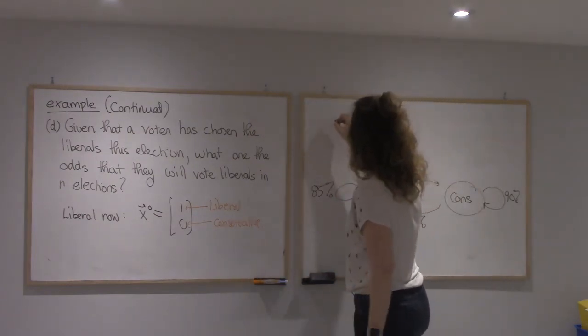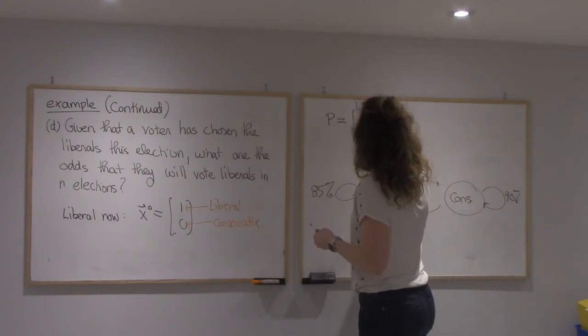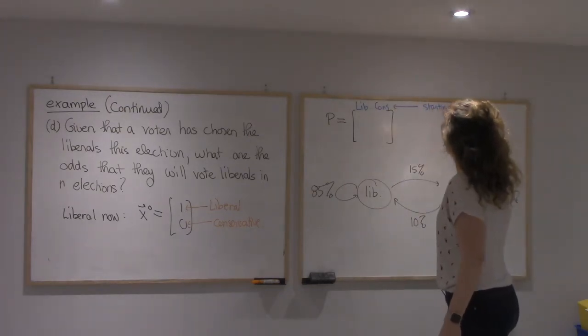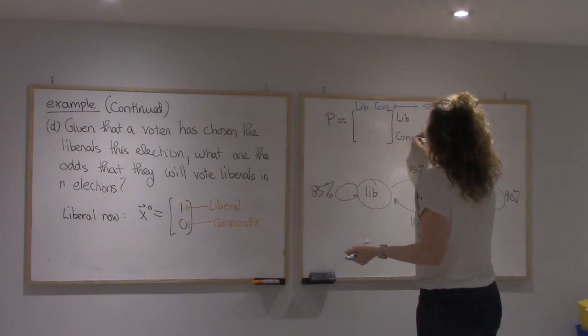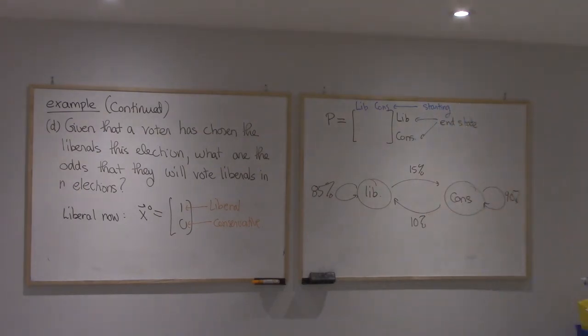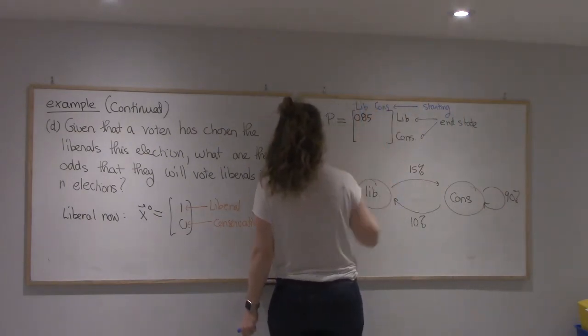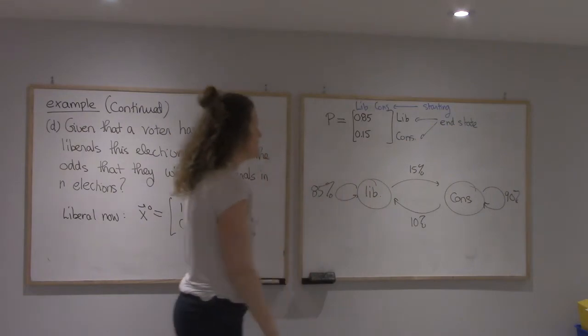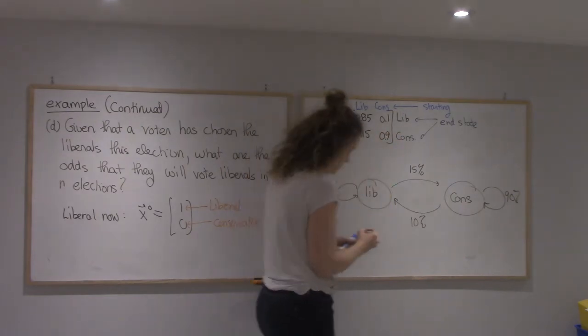All right, and now my transition matrix. So again, I'm going to use Liberal first, Conservative second. Remember the columns are the starting state and the rows are the end state. All right, so if I start Liberal, I have an 85% chance of staying Liberal. Then if I'm Liberal, I have a 15% chance of being Conservative next time. If I'm Conservative, I have a 10% chance of being Liberal and a 90% chance of staying Conservative next time.